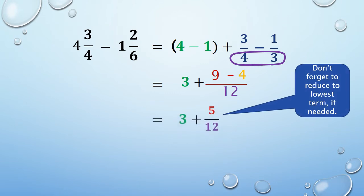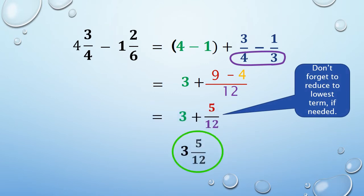Add the fraction to the difference of the whole numbers. Let's have another example: 5 and 2 thirds minus 3 and 3 eighths. First, subtract the whole numbers: 5 minus 3 is 2.